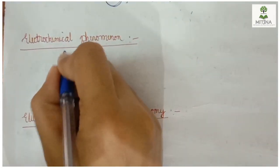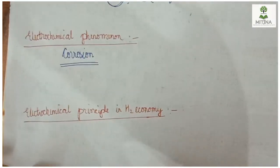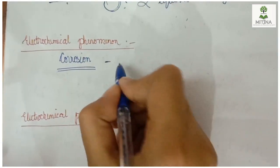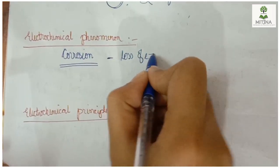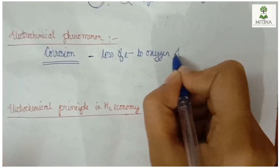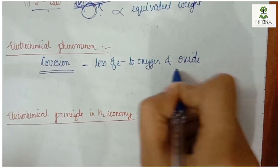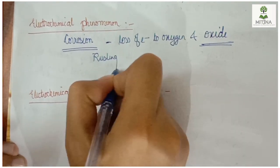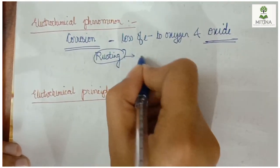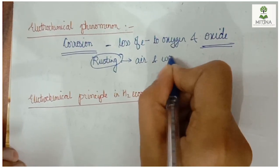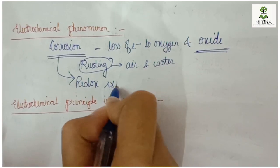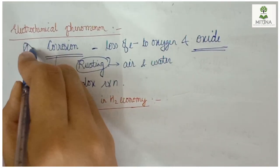Corrosion is an electrochemical phenomenon in practical life. Corrosion is the oxidation of metals when they come in contact with oxygen — metals lose electrons. For example, iron forms rust when it comes in contact with air and water. This involves a redox reaction and is the key electrochemical phenomenon of corrosion.